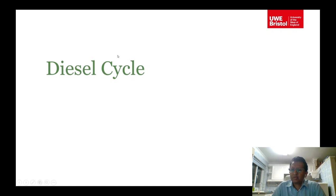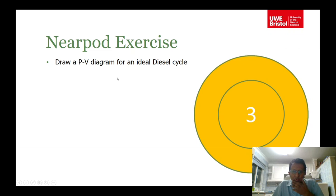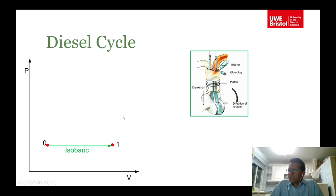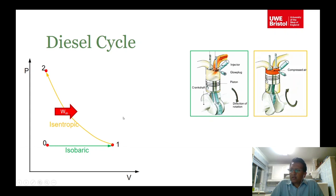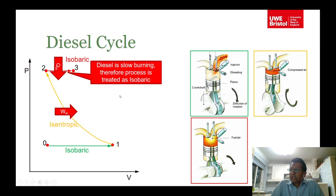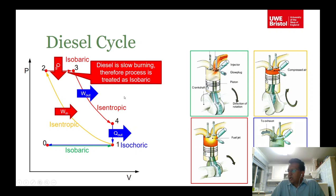Now we talk about the diesel cycle. The PV diagram for the diesel cycle: suction is an isobaric process, compression is isentropic, heat addition is isobaric (since diesel combustion is slow-burning), and then expansion is isentropic, followed by exhaust back to the start. So it is: compression, heat addition, expansion, heat release, and induction/exhaust.